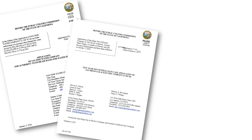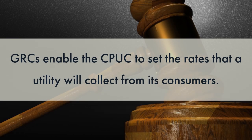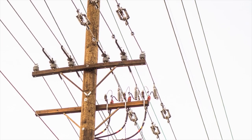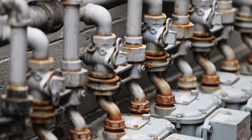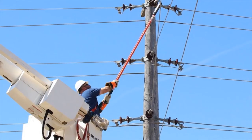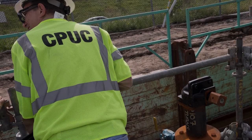A general rate case, or a GRC, is a public proceeding at the CPUC that utilities go through every three years. GRCs enable the CPUC to set the rates that a utility will collect from its consumers to cover the cost of all of the equipment we see all around us — the poles, the wires, the meters, and the power plants and pipelines — as well as the cost of operating and maintaining all of that.